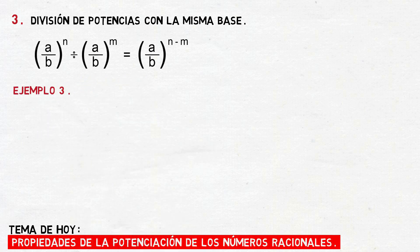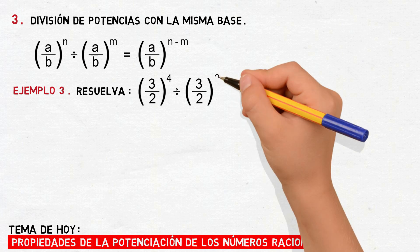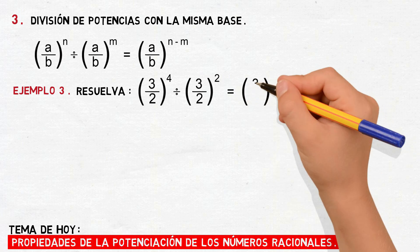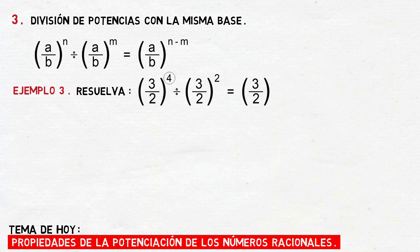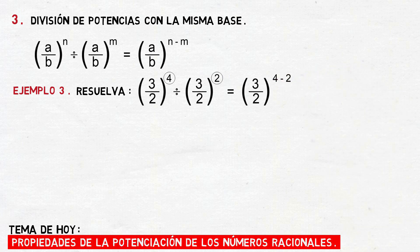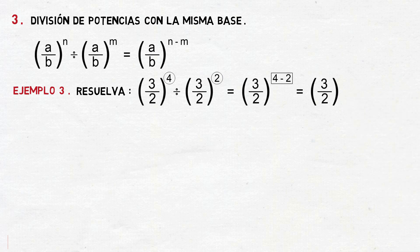Veamos una actividad. Resuelva: 3 medios elevado a la cuarta, dividido para 3 medios elevado al cuadrado. Aplicando la propiedad, esto va a ser igual a conservar la base 3 medios y restar los exponentes. Resolviendo la operación, esto va a ser igual a 3 medios elevado al cuadrado.